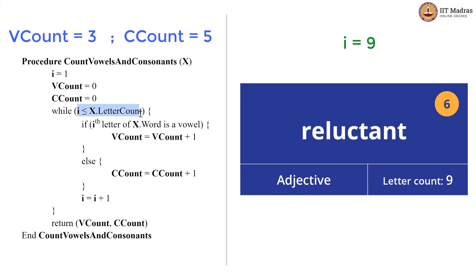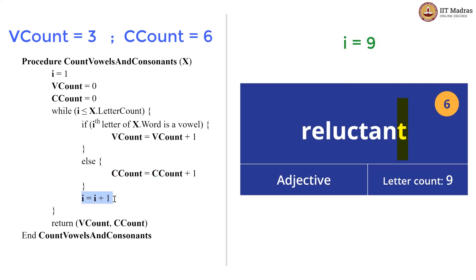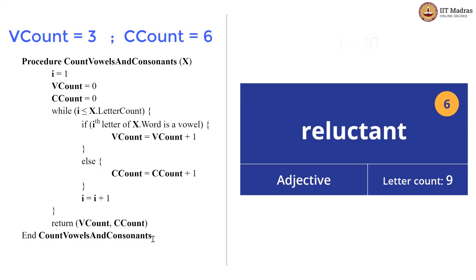9 is less than or equal to 9, so we go inside again and check if the ninth letter of x dot word is a vowel. It is not — it is 't' — so we increment the consonant count again, giving us 6 consonants and 3 vowels. We increment i to 10. When we check the while condition, it fails because 10 is not less than or equal to 9, so we exit the while loop. The procedure returns v_count and c_count, which in this case are 3 and 6 respectively. This procedure returns the count of vowels and the count of consonants. Thank you.